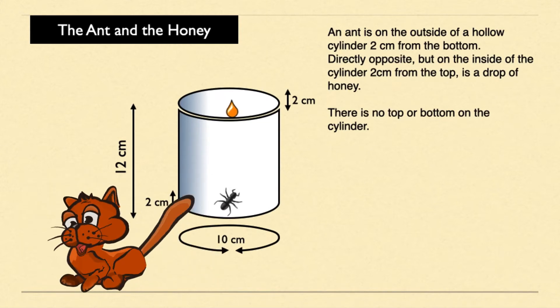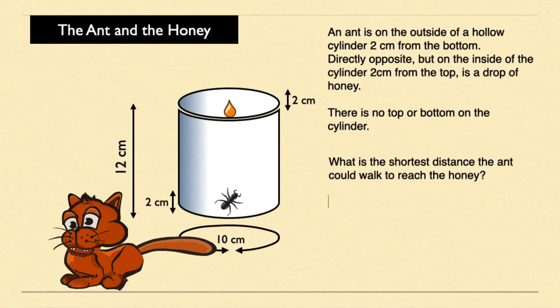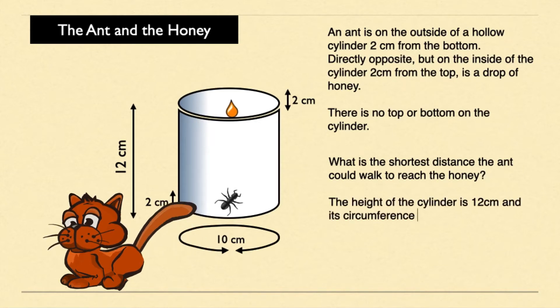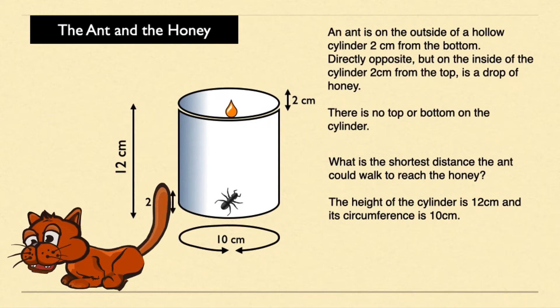What is the shortest distance the ant could walk to reach the honey? The height of the cylinder is twelve centimeters, and its circumference is ten centimeters.